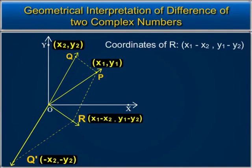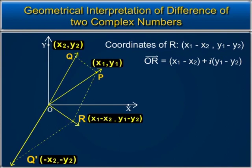Thus, the coordinates of point R are x1 minus x2 and y1 minus y2, and R is the complex number x1 minus x2 plus i into y1 minus y2. This confirms that the difference of two complex numbers is the difference of their real parts and the difference of their imaginary parts. Thus, the difference of two complex numbers can be visualized as subtraction of vectors using the parallelogram law, represented by the diagonal of the parallelogram formed by the first original vector and the negative of the second vector.